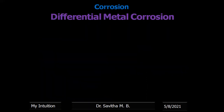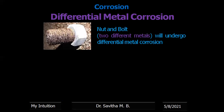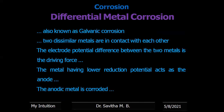The first one is differential metal corrosion. The name itself tells us that when two different metals are directly in contact, the corrosion that happens is called differential metal corrosion. When two different metals are in contact, one of the metals will be the anode and one will be the cathode. One metal will have higher reduction potential and the other will have lower reduction potential. The lower reduction potential metal will act as the anode, and the higher reduction potential metal will act as the cathode. It is the anode that is lost. This type of corrosion is also called galvanic corrosion because a galvanic cell is formed.